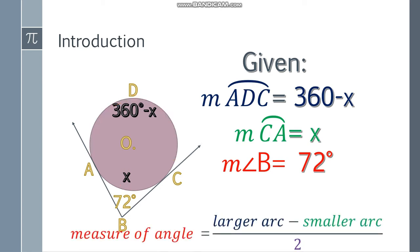Next one. Let's use the formula. The measure of angle, to get this, measure of angle is the larger arc minus the smaller arc, divide it by 2.